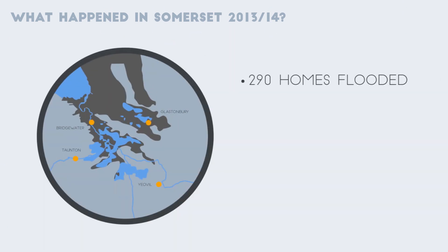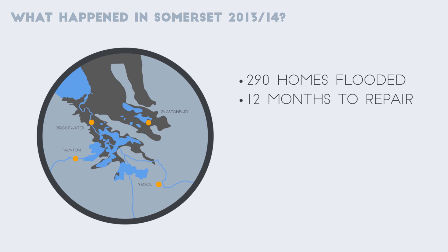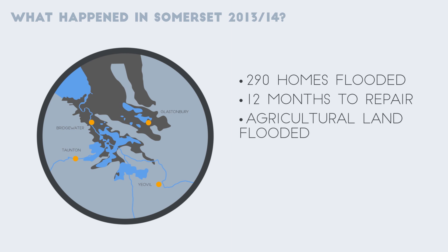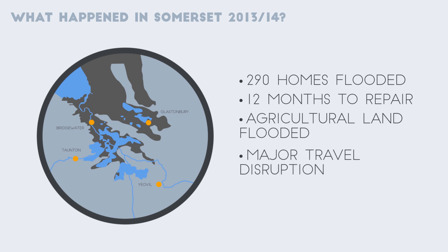Approximately 290 homes were flooded, and it took over 12 months to repair some of these houses. Agricultural land was also flooded for prolonged periods, and farmers struggled to find safe places to house their livestock. People also experienced difficulty in travelling because major roads were underwater, and some villages were completely cut off.